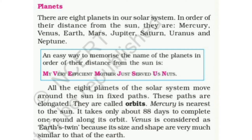All the 8 planets of the solar system move around the sun in fixed paths. Solar system ke 8 planets ek nishchit path par sun ke chakkar lagate hain. Ye raaste elongated oval shape mein faile hote hain — ye orbits kehlate hain. Mercury planet sun ke sabse nearest hai; sun ka ek chakkar lagane mein ise 88 days lagte hain. Venus ko Earth ka twin kaha jaata hai, kyunki iska size aur shape lagbhag similar hai.